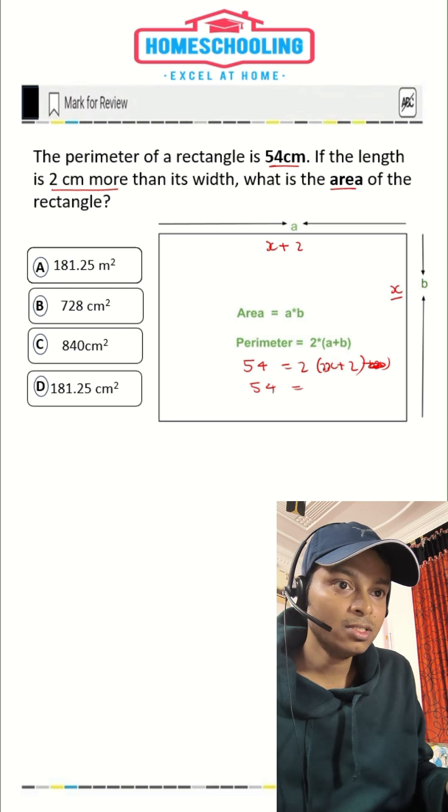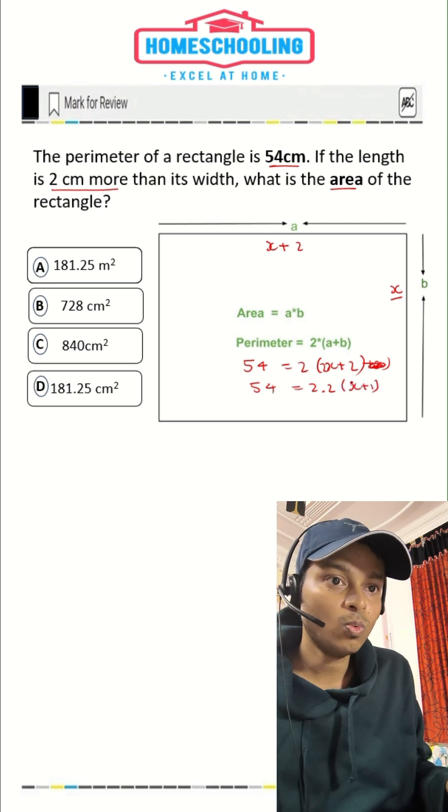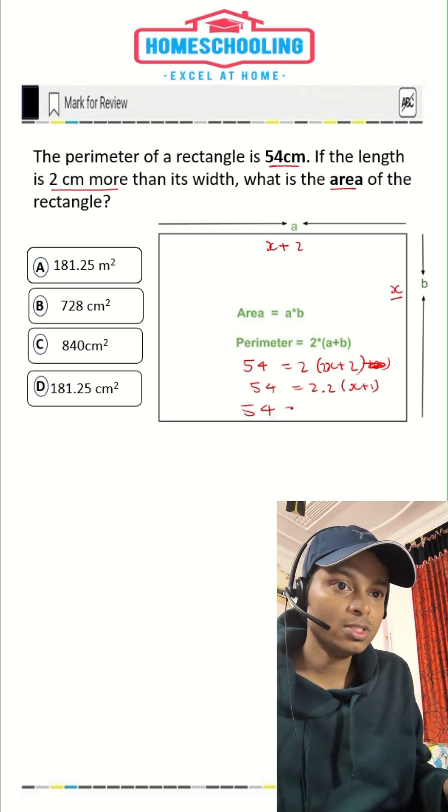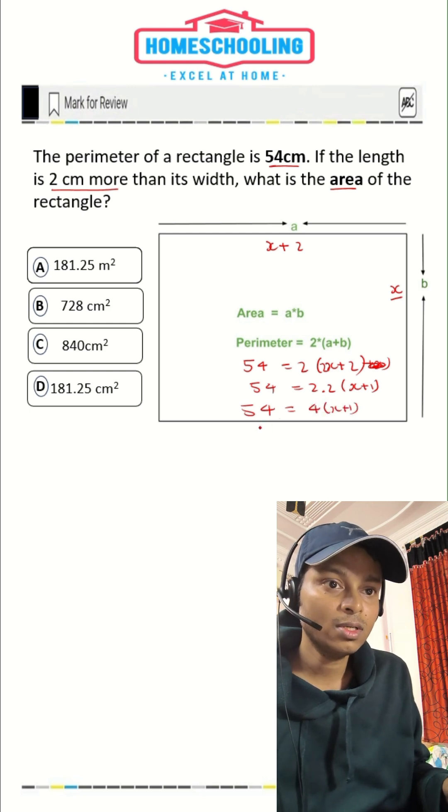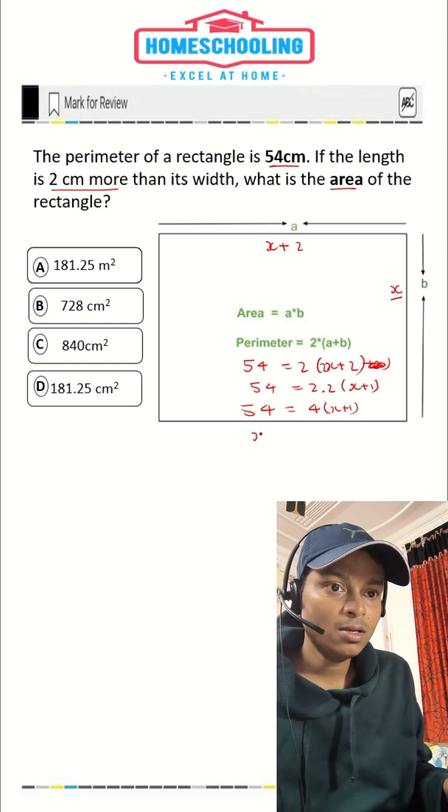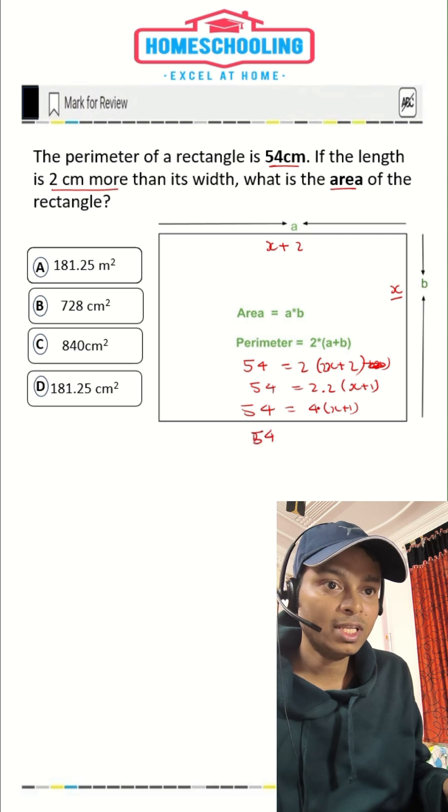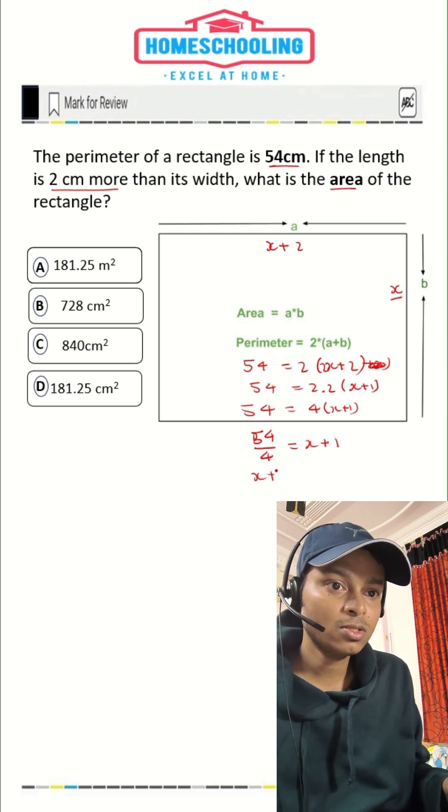And if you take this two common, so two times two, that would be two times two, X plus one. Now 54 is equal to four times X plus one. Now if you take four on the other side, 54 divided by four is equal to X plus one. And X plus one is equal to 13.5.